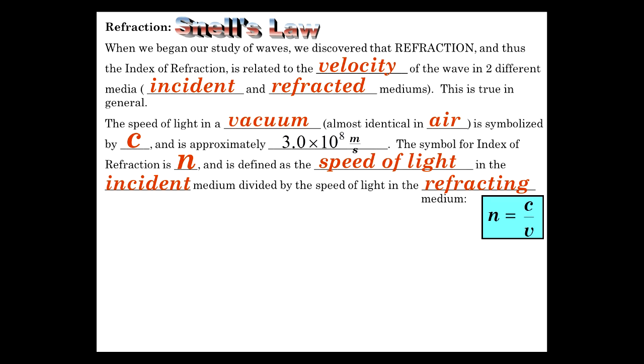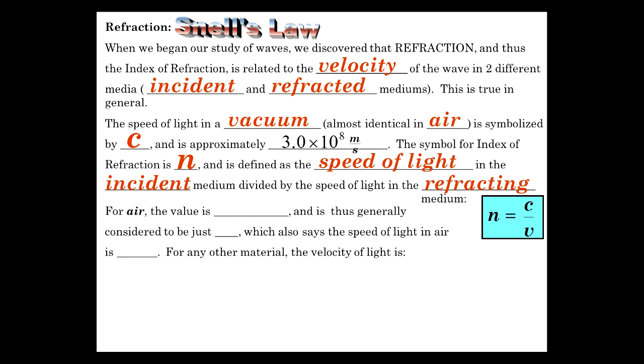This is a real easy formulation. The index of refraction is the ratio of the speed. It's the speed of light over the speed that the light takes in a non-vacuum medium. C is just the speed of light in a vacuum.